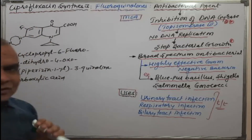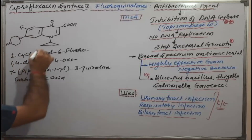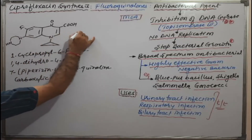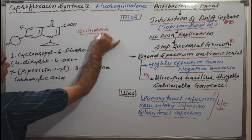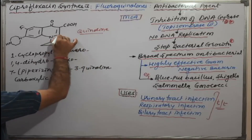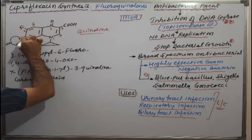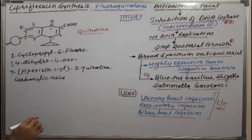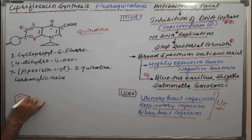Now let's come to the structure of ciprofloxacin. As we have discussed, it is a quinoline derivative. We give the numbering 1, 2, 3, 4, 5, 6, 7, and 8 to the quinoline ring system. Try to understand: this is our quinoline ring system, which has two double bonds.